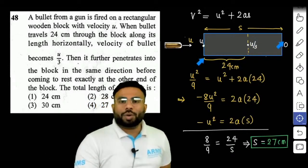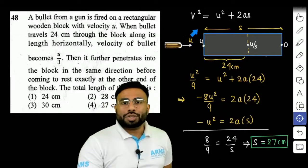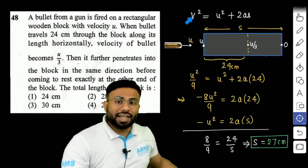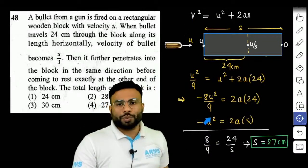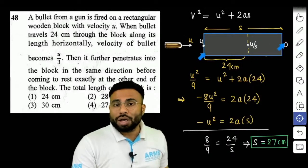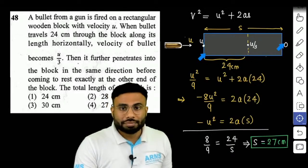और यह पूरे पार्ट के लिए हम लगा दे equation, so final velocity is 0, यहाँ पे हो जाएगा U square, U square को हम left inside लेके आजाए, तो ही हो जाएगा, minus U square is equal to 2A S. S क्या है, इस पूरे block का, इस block का complete length